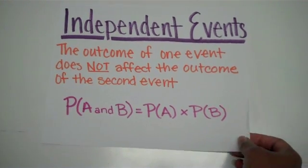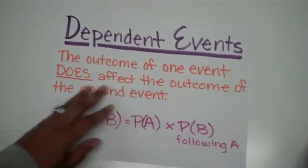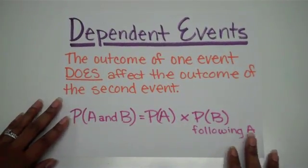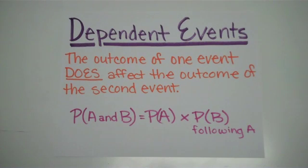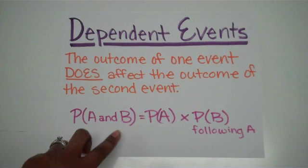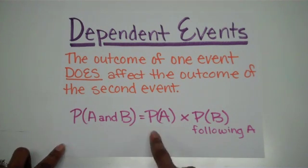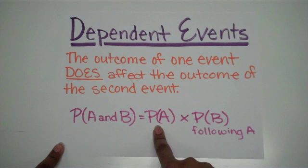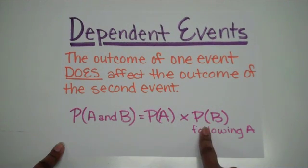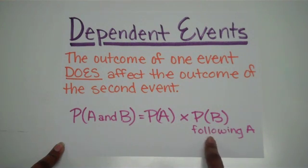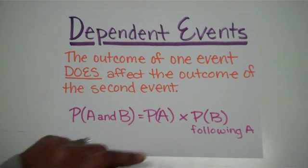So if they're independent events, obviously you should think — well, the opposite of that would be dependent events. Dependent events is when the outcome of one event does affect the outcome of the second event. Again, we find the probability of these two events by taking the probability of event A and multiplying it by the probability of event B. But event B's probability is going to depend on what happened during that first event.